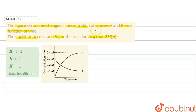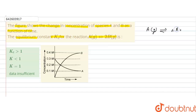We have to find the equilibrium constant for the reaction A(g) ⇌ 2B(g). Looking at the figure, we identify the equilibrium concentrations where the concentration values become constant over time.